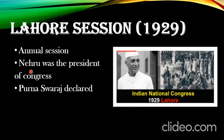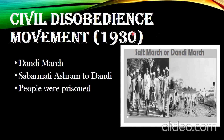During this Lahore Session, some things were decided. Each session has a different president, and here Nehru was kept as the leader. Purna Swaraj was declared, meaning complete independence. People had agreed for complete independence and their motto was to get independence from the British and have a free India. It was also decided that 26th January would be celebrated as Independence Day every year, and the Civil Disobedience Movement would be launched in the year 1930.